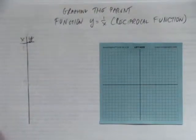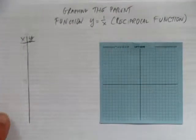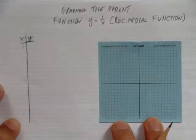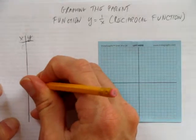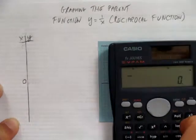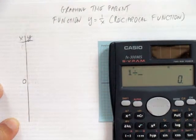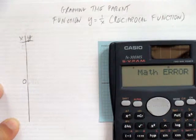In this video, we'll look at graphing the parent function y equals 1 over x, which is the reciprocal function. As we like to do, we start with 0 and substitute 0 into this equation. Something unusual happens in this case. When you substitute 0 here, you're really saying, what's y when you do 1 divided by 0? And that's an error.